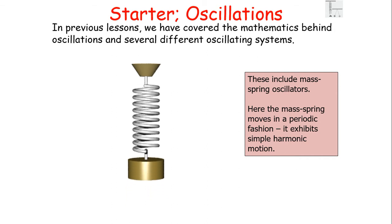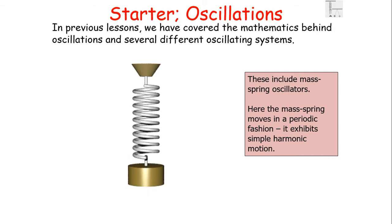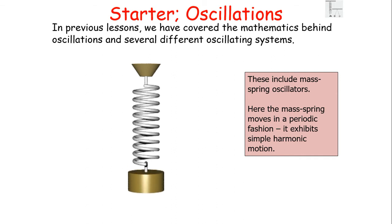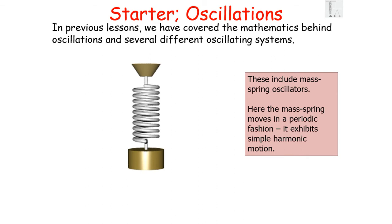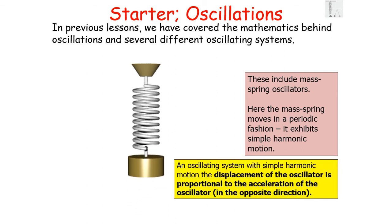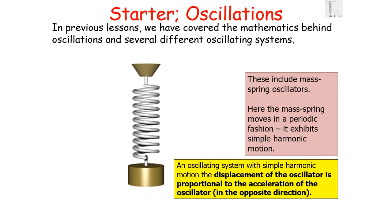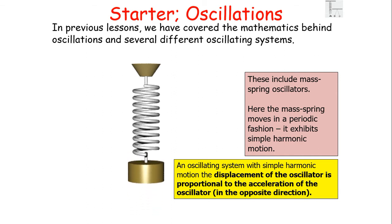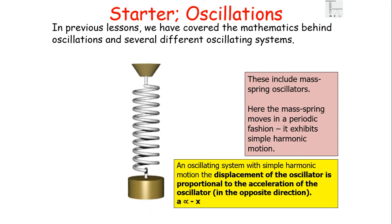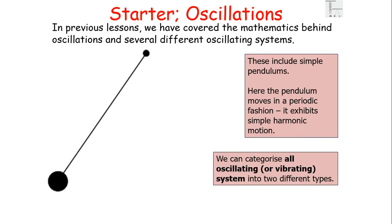In previous lessons we've covered the mathematics behind oscillations in several different oscillating systems. These include mass-spring oscillators, where the mass-spring moves in a periodic fashion and exhibits simple harmonic motion. Remember: an oscillating system with simple harmonic motion is when the displacement of the oscillator is proportional to the acceleration in the opposite direction — A is directly proportional to minus x. Another example is the simple pendulum, which also exhibits simple harmonic motion.